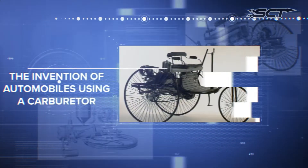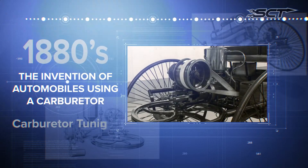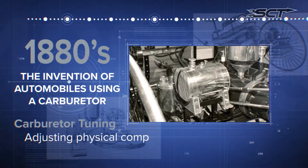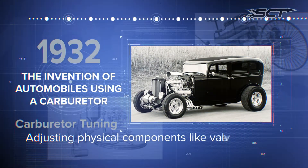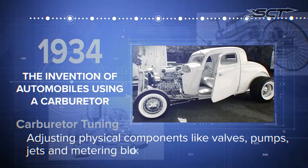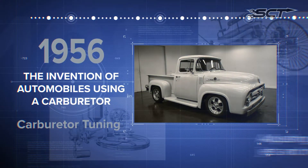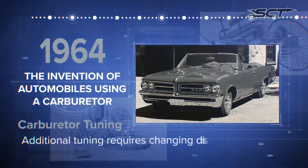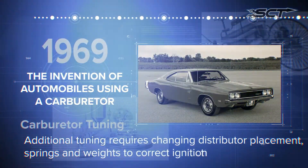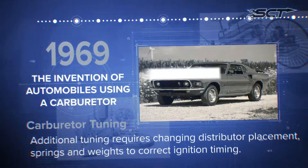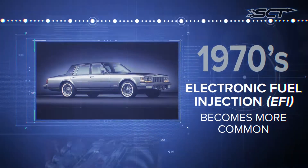The invention of automobiles using a carburetor began carburetor tuning — adjusting physical components like valves, pumps, jets, and metering blocks to correct fueling. Additional tuning requires changing distributor placement, springs, and weights to correct ignition timing.